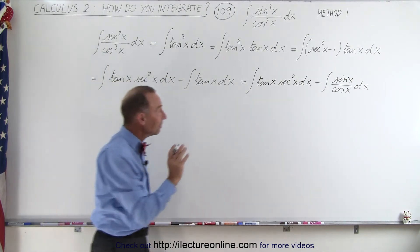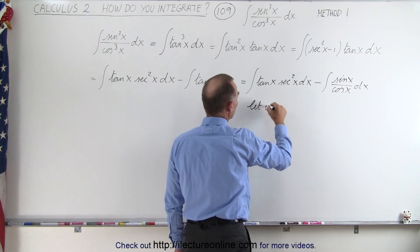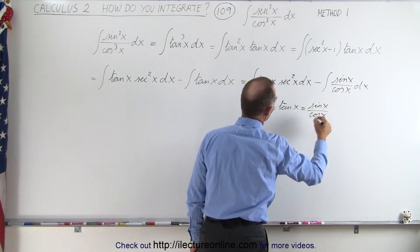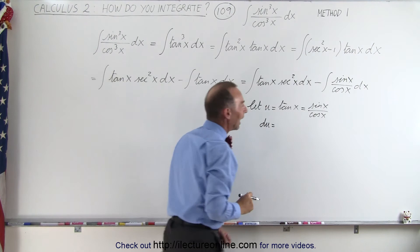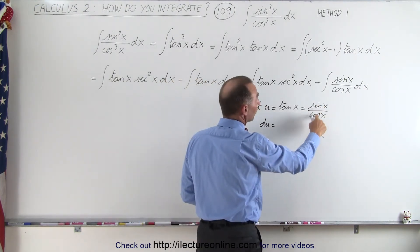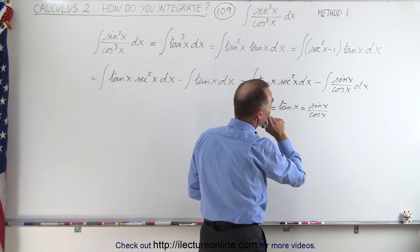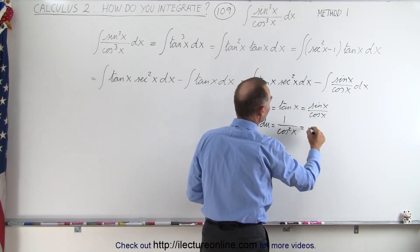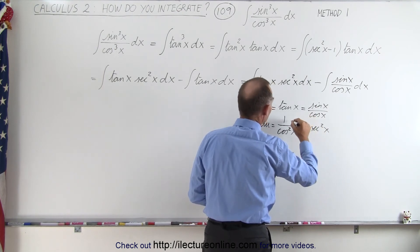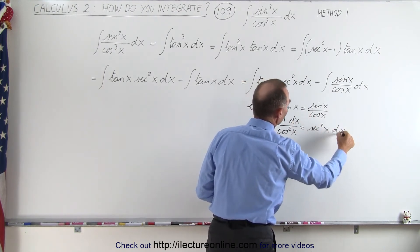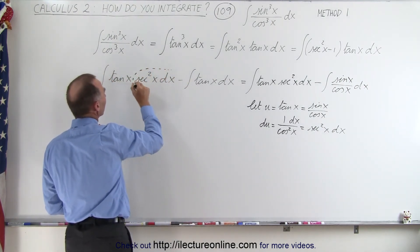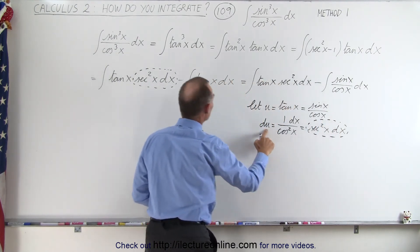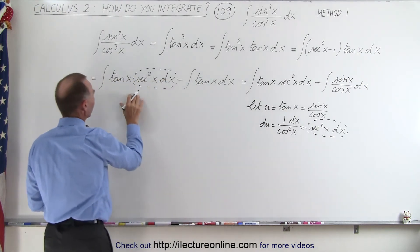For the first integral, we let u equal the tangent of x, which equals sine of x divided by cosine of x. Then du equals the derivative of that — using the quotient rule, the denominator times the derivative of the numerator minus the numerator times the derivative of the denominator — which gives us 1 over cosine squared of x, equal to secant squared of x, times dx. So the tangent of x becomes u and secant squared of x dx becomes du.